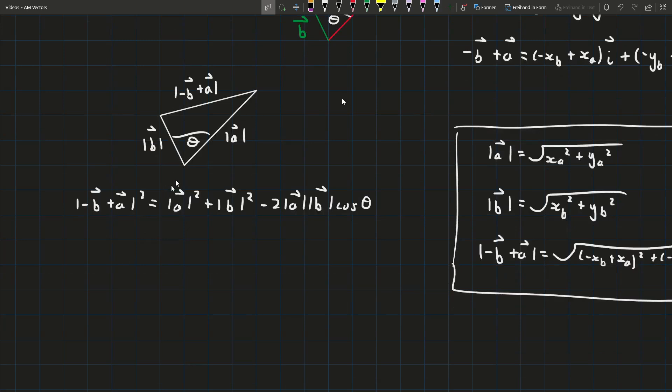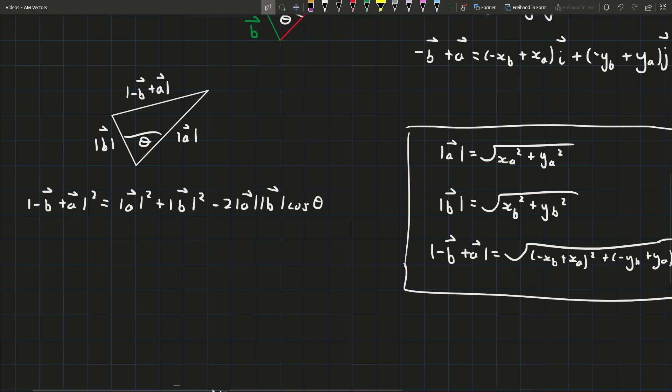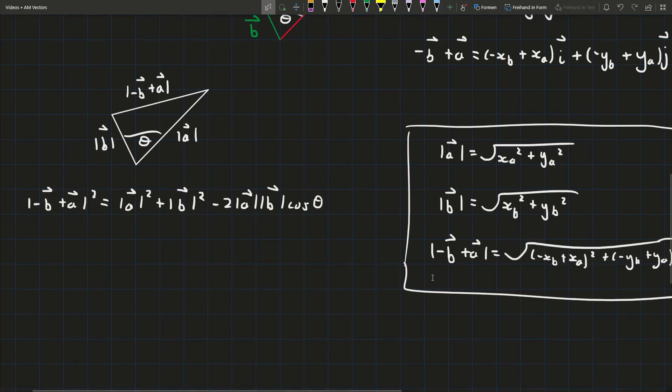So now I'm going to show you how to do it. We can just first of all sub in these. So we're squaring these magnitudes but since there's a square root here it'll cancel out anyway. So what we'll get is (minus xb plus xa)² plus (minus yb plus ya)² equals...